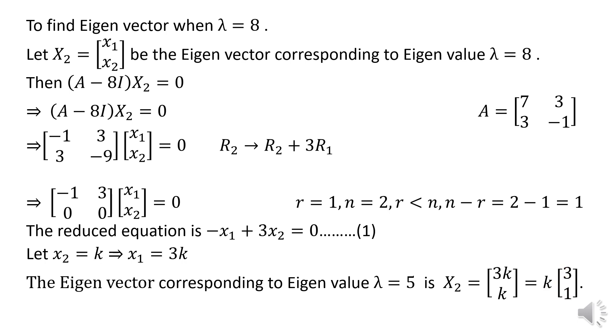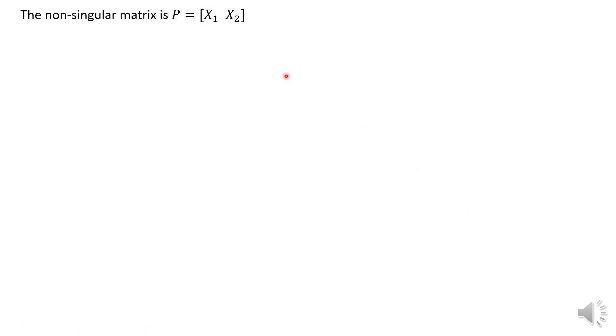After finding the eigenvectors for both eigenvalues, write down the non-singular matrix P consisting of x1 and x2. So P = [[-1, 3], [3, 1]].